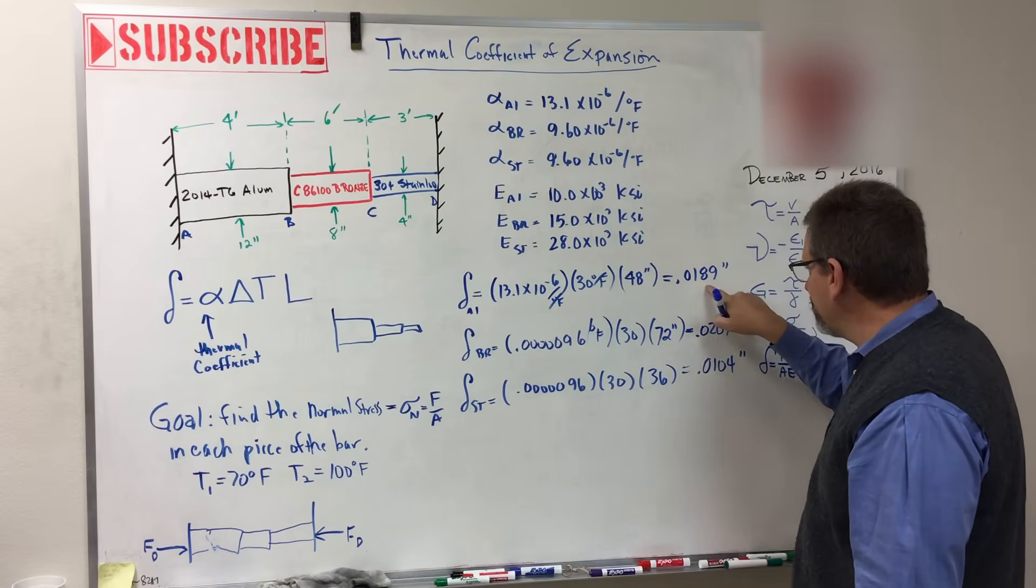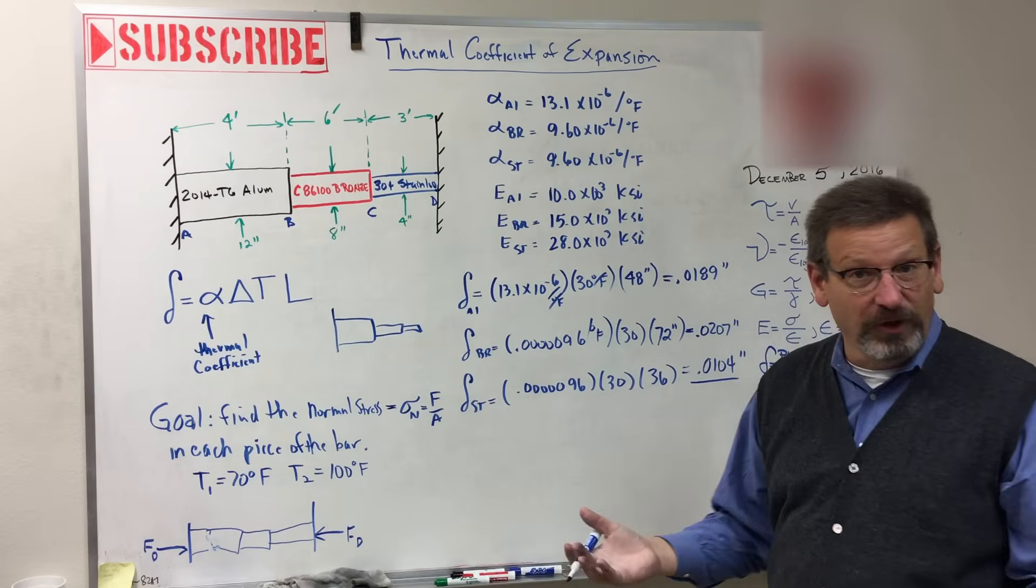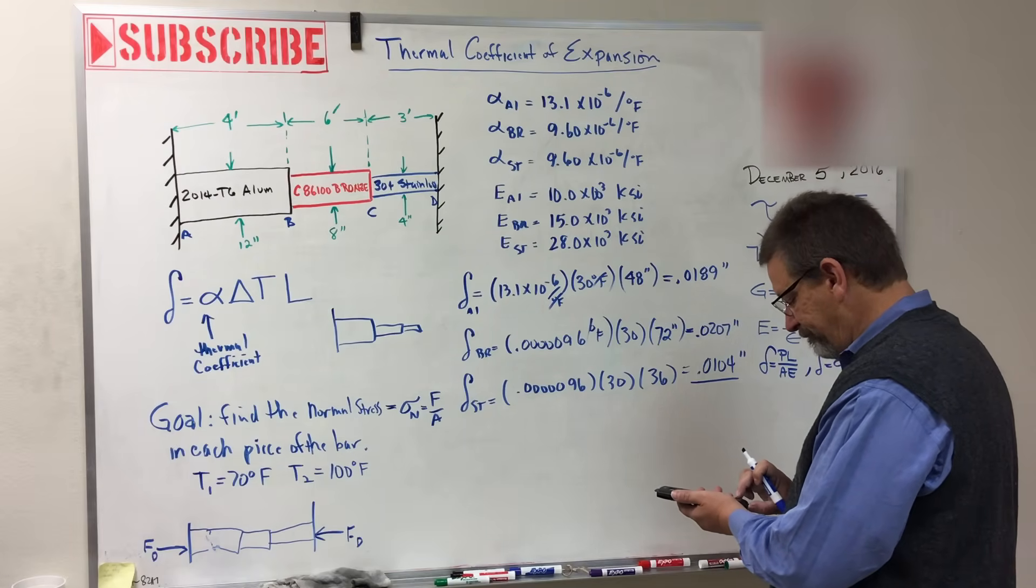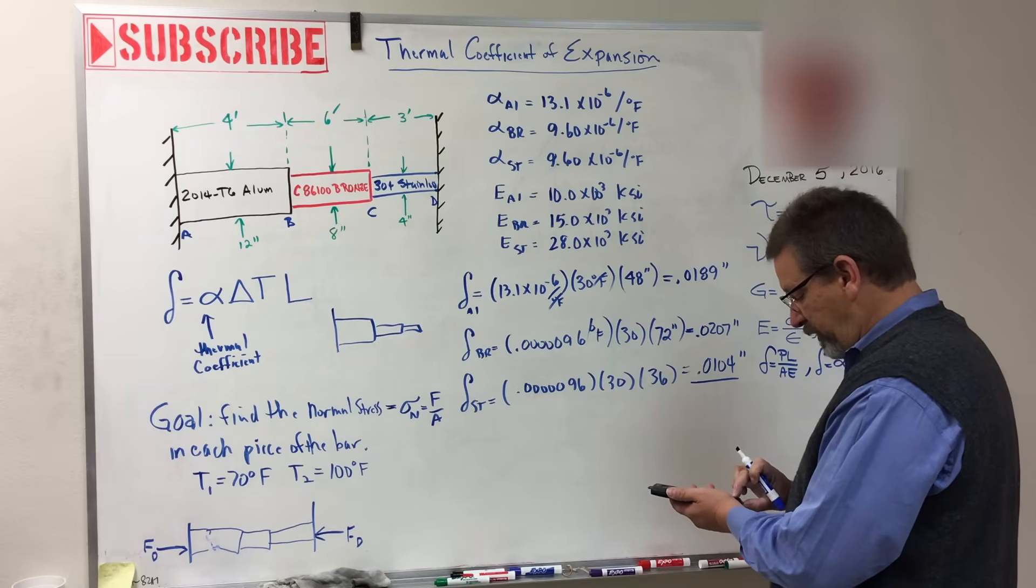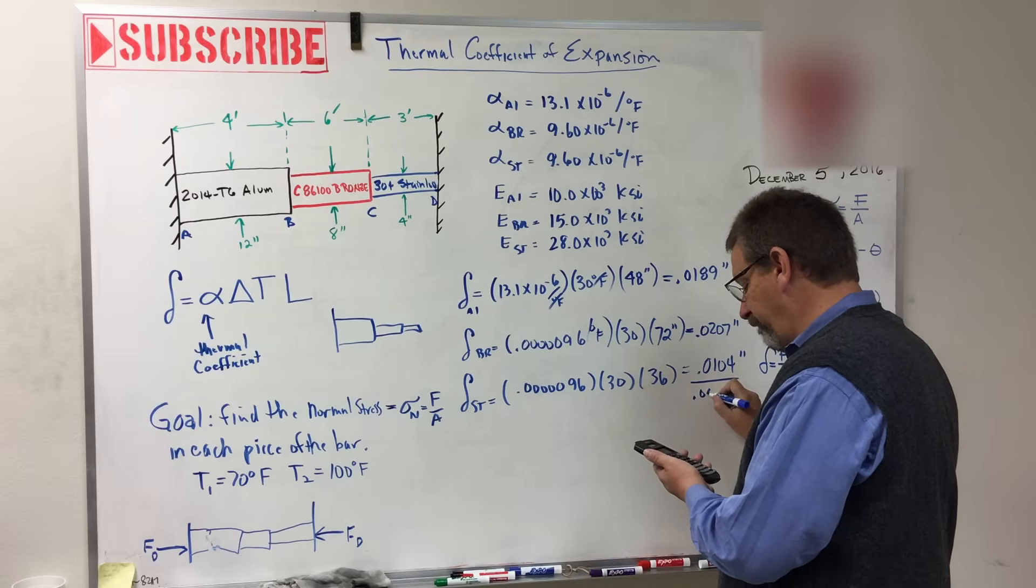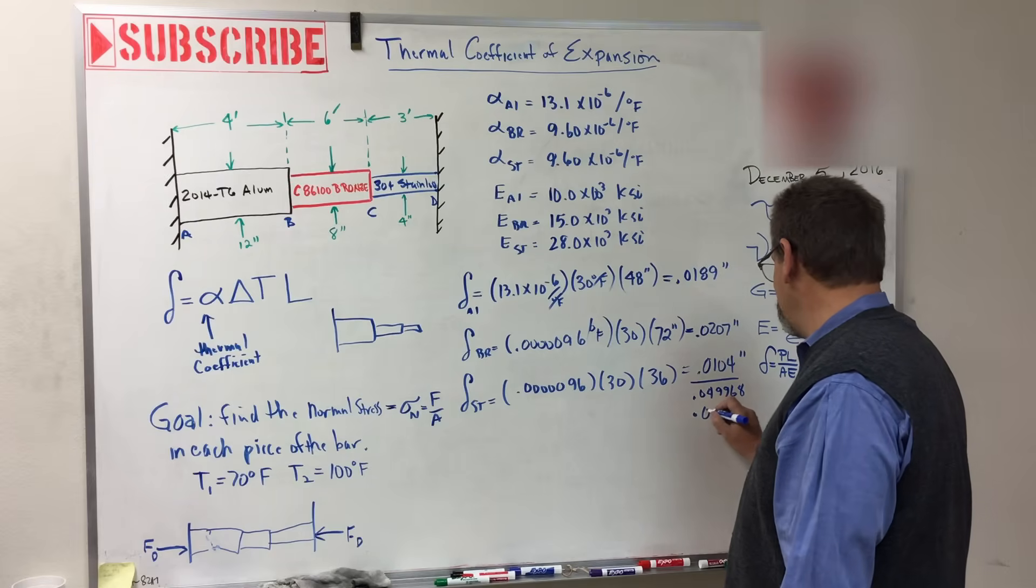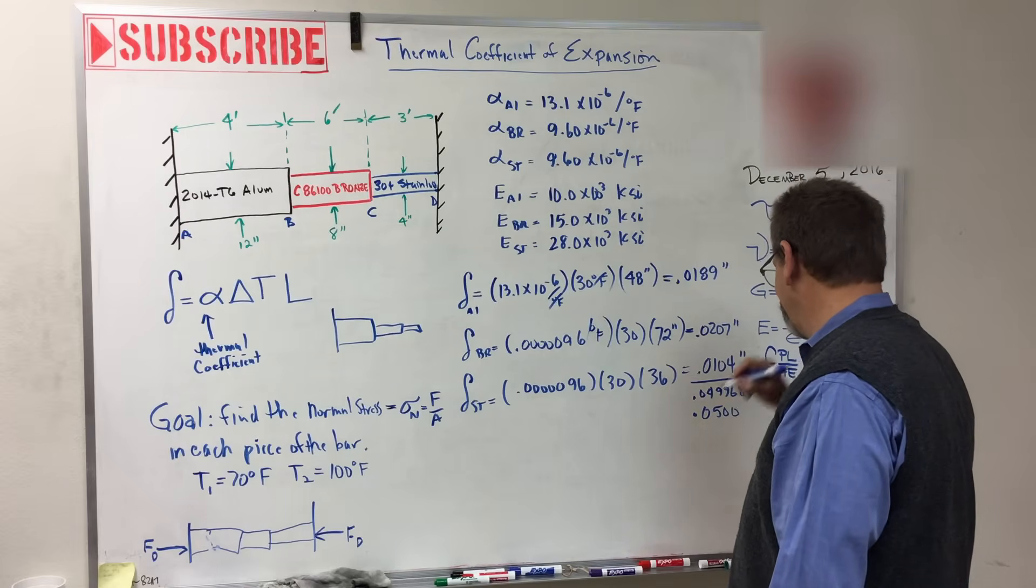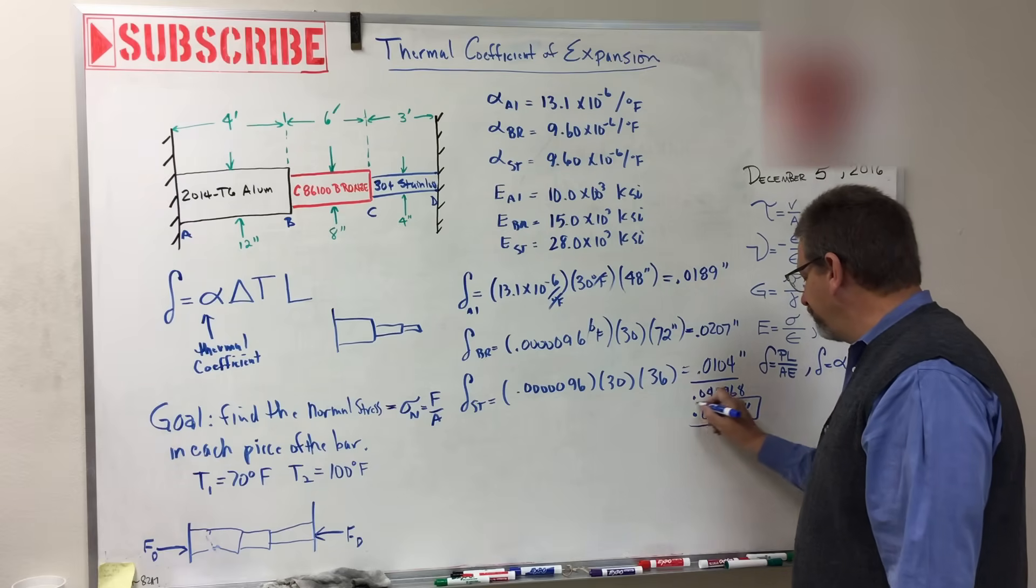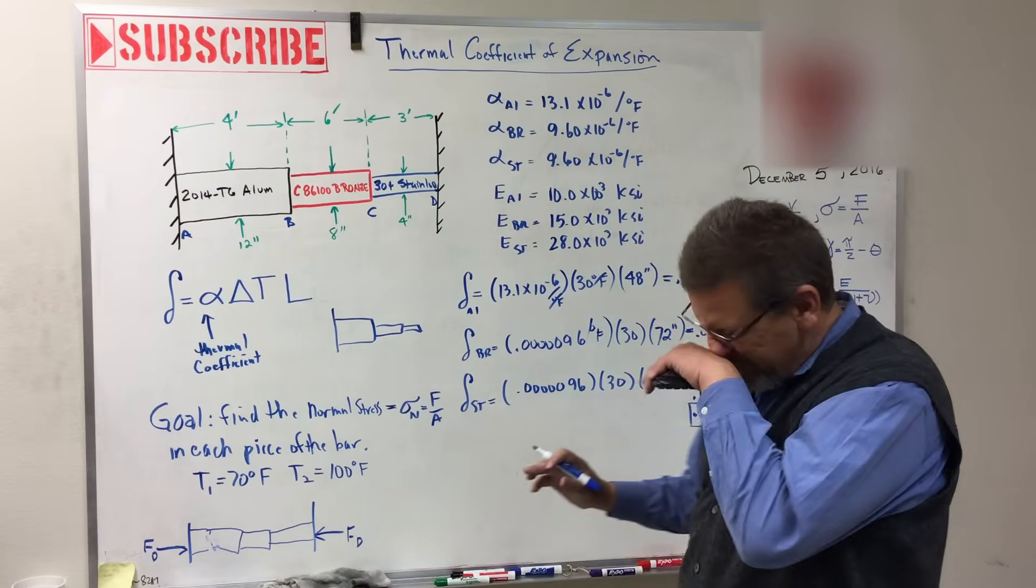So that's how much the aluminum grows, the brass, and the stainless. So if I add those three together, I'll get the growth of the whole thing. 0.0104 plus 0.0207 plus 0.0189 is equal to 0.0500. So that's the total delta that the thing is going to stretch. And so now we need to push it back into shape.